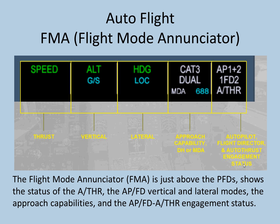Read the FMA at all times. It is above the PFD and shows the statuses of various modes. There are five parts: Thrust, Vertical, Lateral, Approach Capabilities and Minimums, and Autopilot/Flight Directors/Auto-Thrust Engagement Status. It gives you the live status of the aircraft — what mode the aircraft is in — and that's really important for you to interpret what the aircraft is doing.